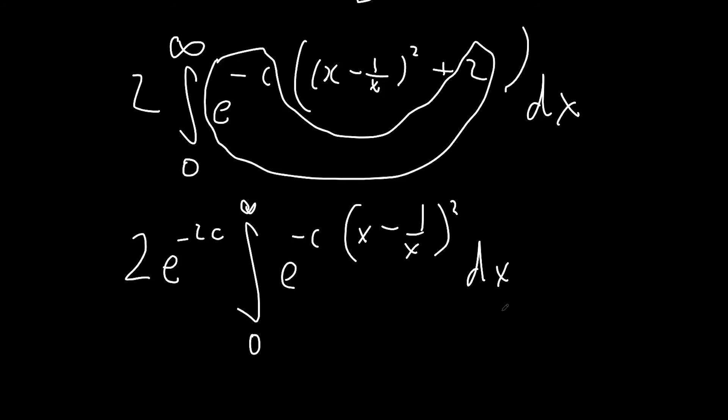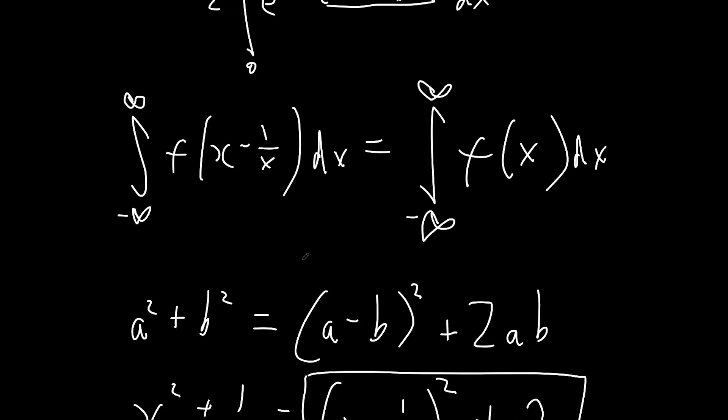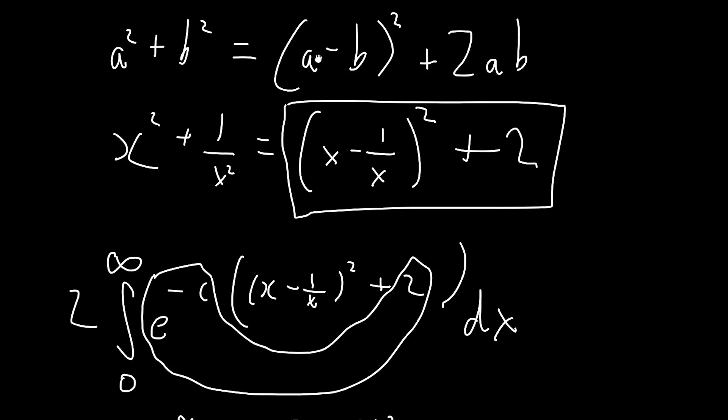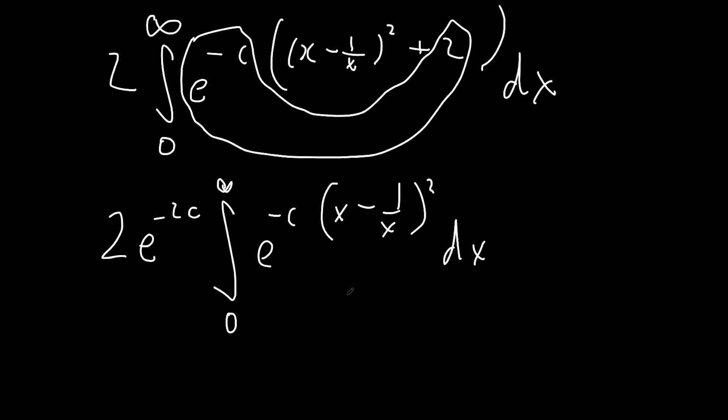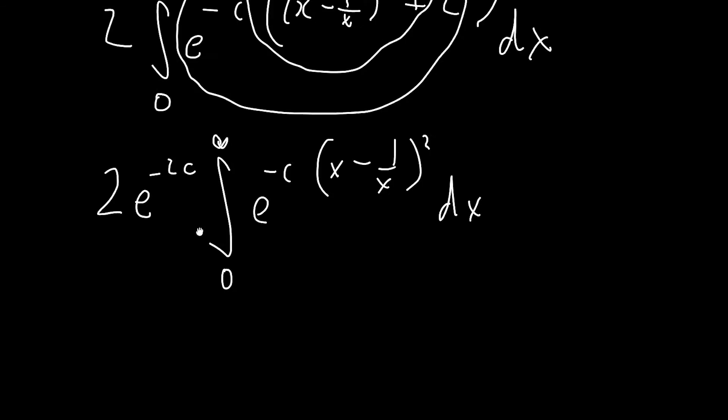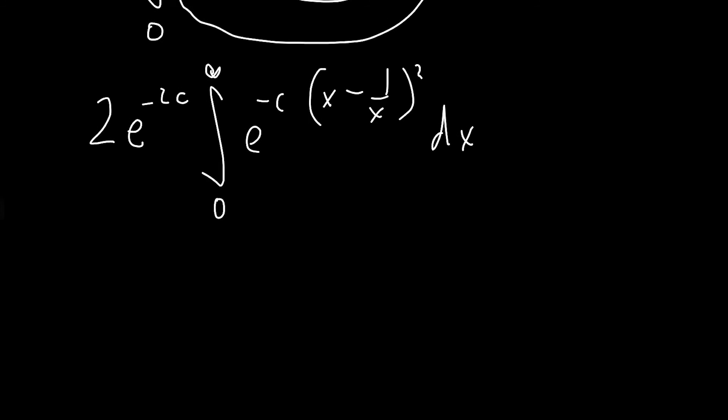Now we're very close to being able to use Glasser's Master Theorem, but Glasser's Master Theorem relies on the fact that it's between negative infinity and infinity and we have between 0 and infinity. However, this is an even function, so we can half this and make this negative infinity.